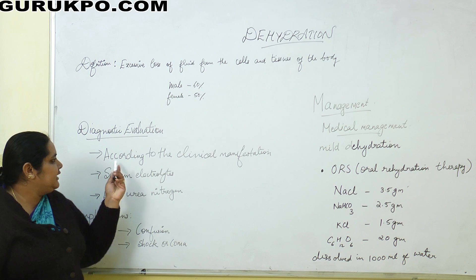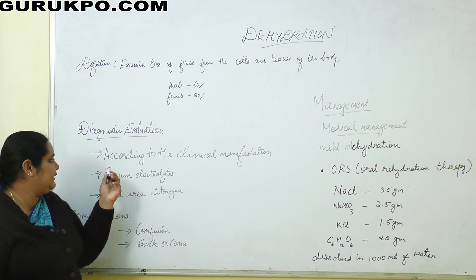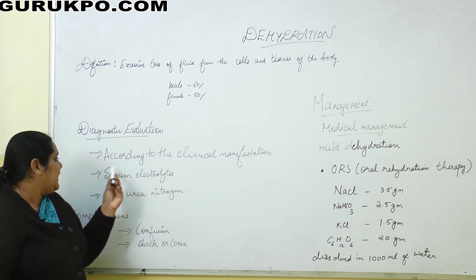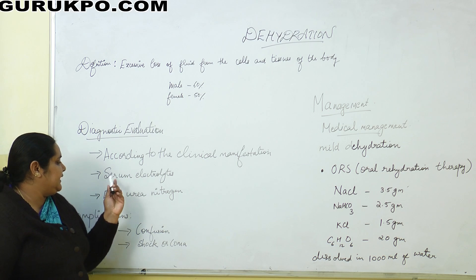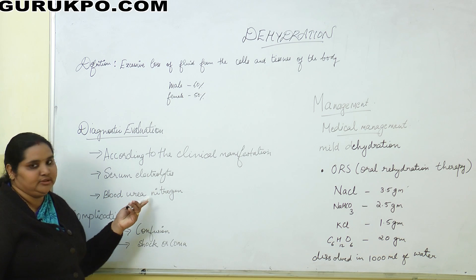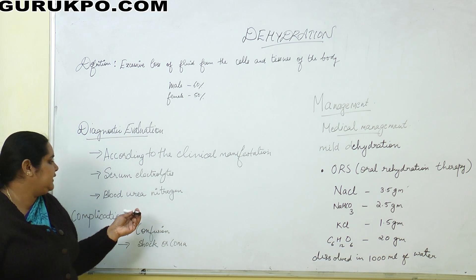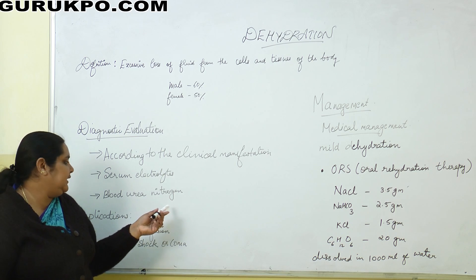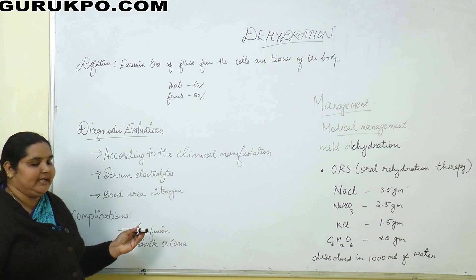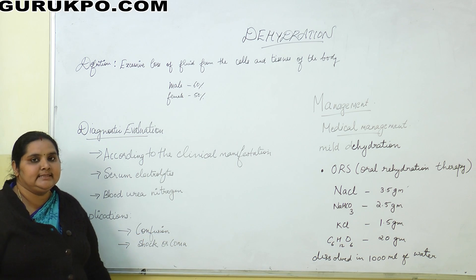Also, hypotension may be present. For diagnostic evaluation, we first do history collection and physical examination, then assess clinical manifestations. We also do blood tests — specifically serum electrolytes and blood urea nitrogen. The blood urea nitrogen level is found to be increased in dehydration.